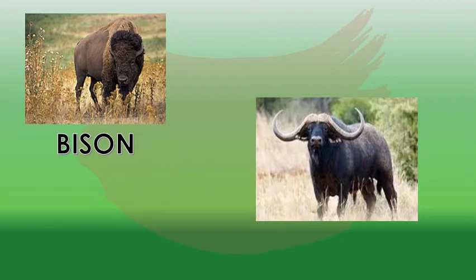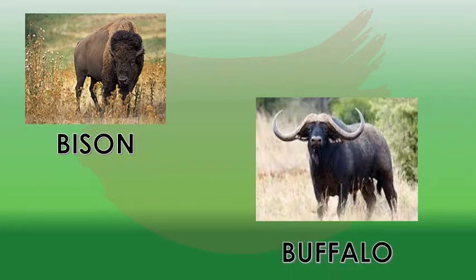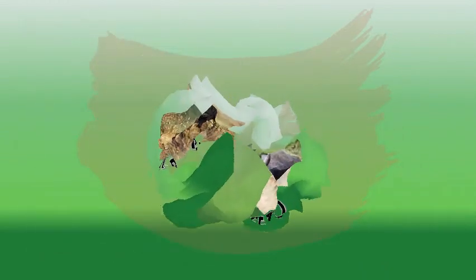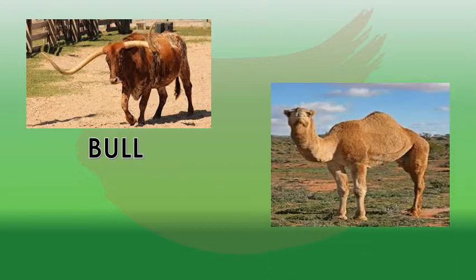Next, what is this? This is buffalo. What is this? This is bull. Now next, what is this? This is camel.